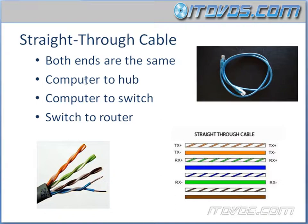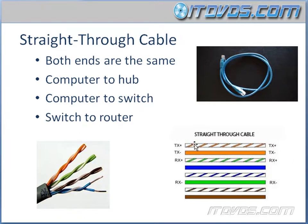We use a straight-through cable to connect a computer to a hub, a computer to a switch, or even a switch to a router. Patch cables are your most common type of cable. It's important to note that technically the colors don't matter — there are different standards. What matters is that both ends are the same. The first two wires are your transmit, and wires three and six are the receive wires.